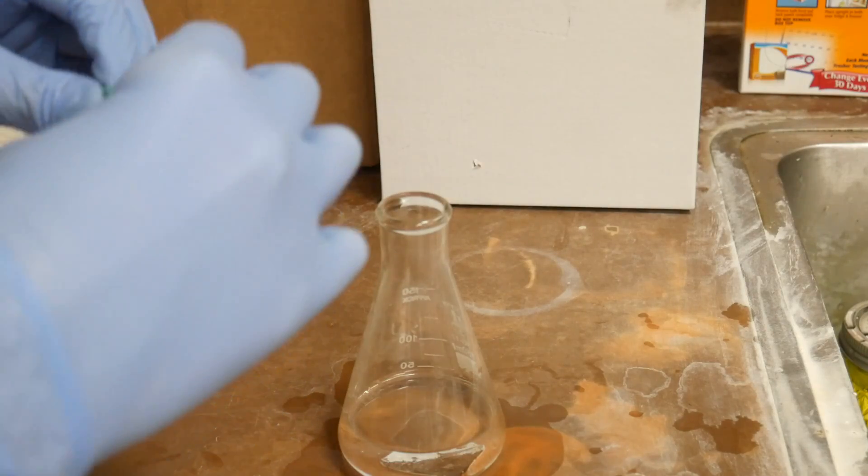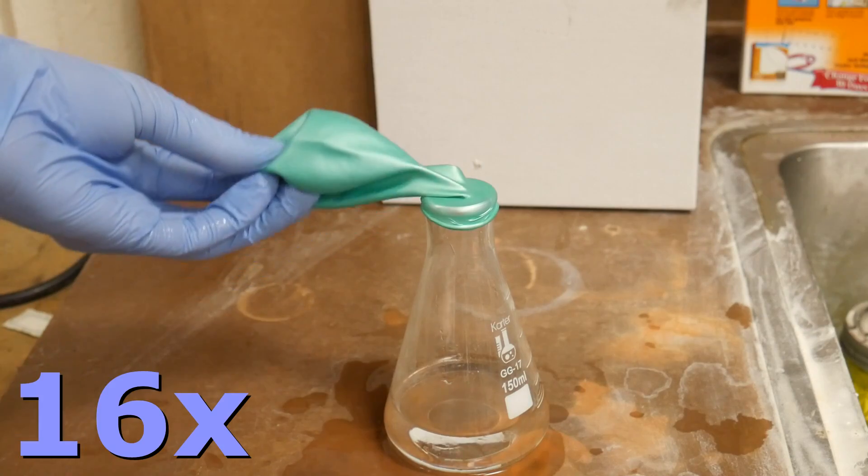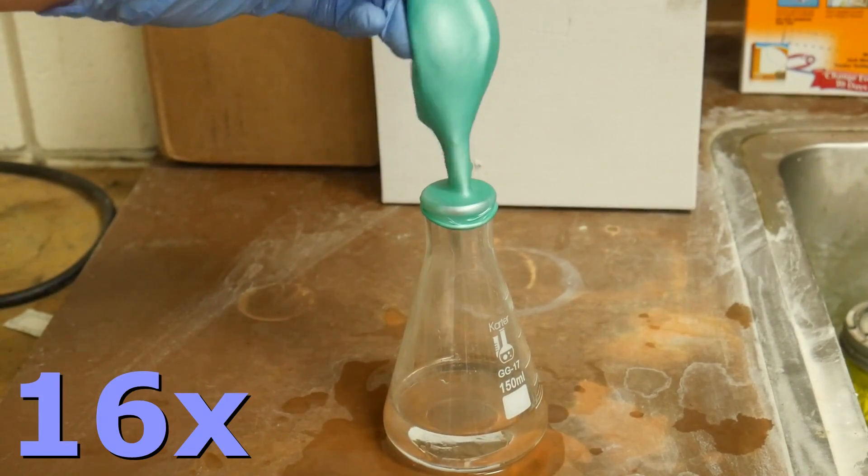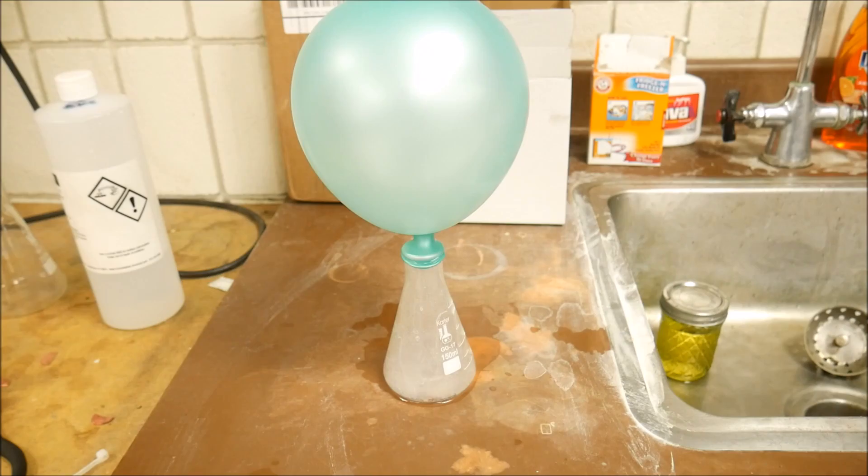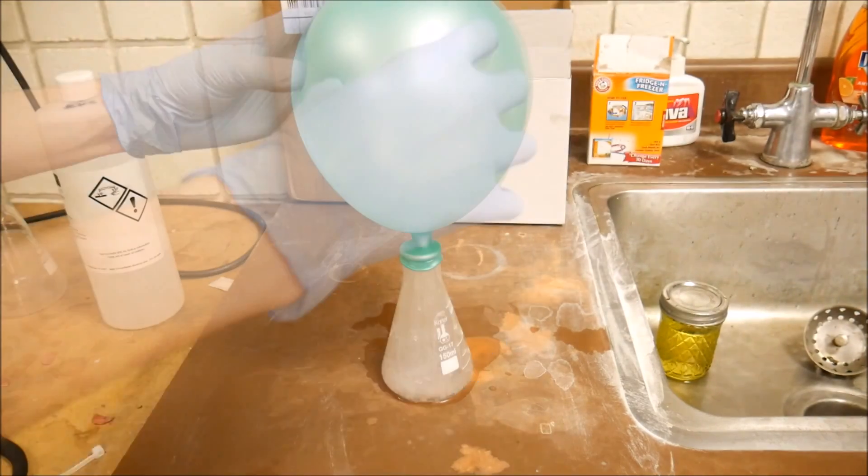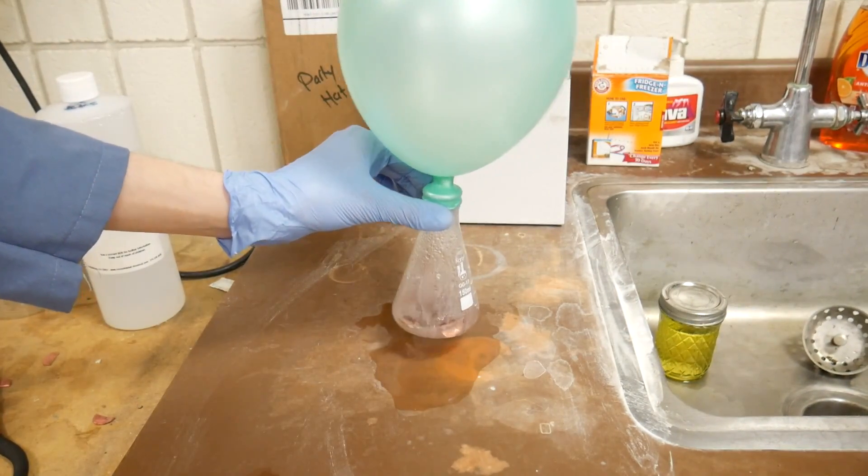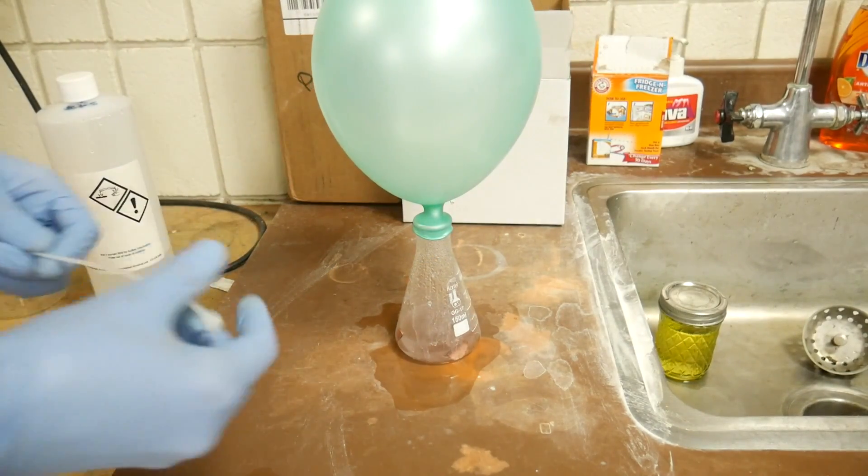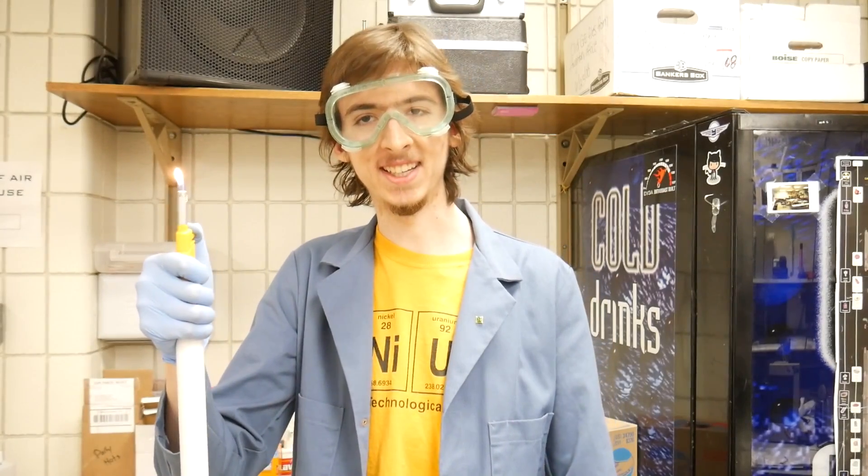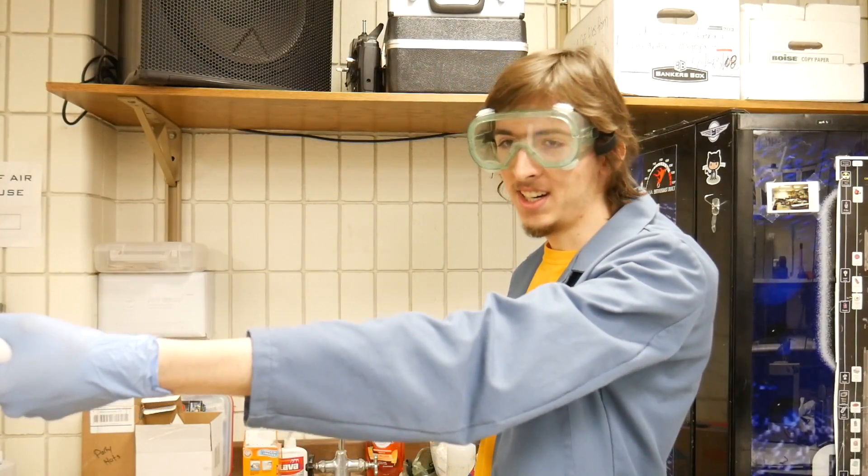All right here we go. Take two. All right that looks like all the hydrogen I'm gonna get. Now I don't know for the life of me how to tie a balloon but I can pull a zip tie with the best of them. While we were waiting for that to finish I came up with a new invention. It's a lighter on a stick. That way I don't need to stand too close to the balloon when I ignite it.